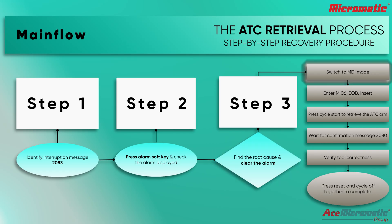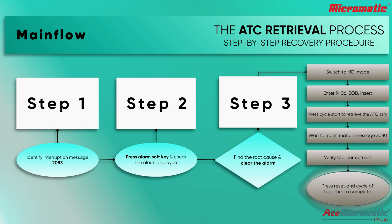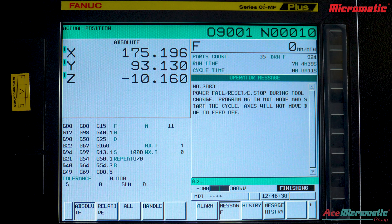Switch to MDI mode. Enter M06, then EOB, and then Insert. Press Cycle Start to retrieve the ATC arm. Wait for confirmation message 2080. Verify tool correctness, then press Reset and Cycle Off together to complete the process.